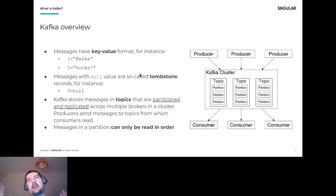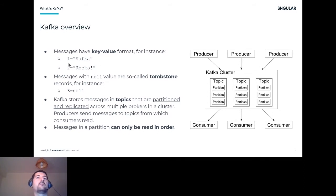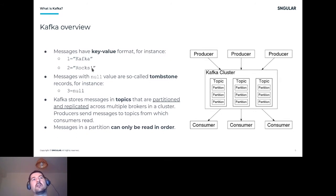How can you produce a message? A message is in key-value format — you have a key and then a value. In Kafka, all it cares about is a sequence of bytes. You can put any content you want: string, numeric, JSON, Avro, or even binary format like images or video. It's not recommended to put very large content, but technically it's possible.